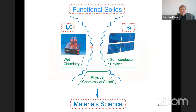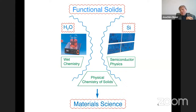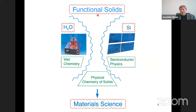The two best-understood materials in our world are water — for the chemist — and silicon — for the physicist. For water, what matters is identifying the relevant particles: dissociated H⁺ and OH⁻ ions. For silicon, what matters is identifying electrons and holes as decisive carriers. In the same way, whenever dealing with functional materials, one has to identify the charge carriers and understand their concentrations and interactions.